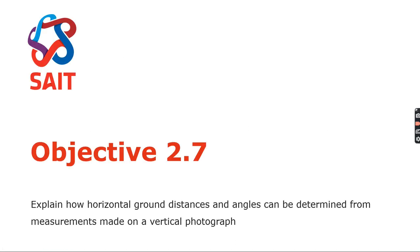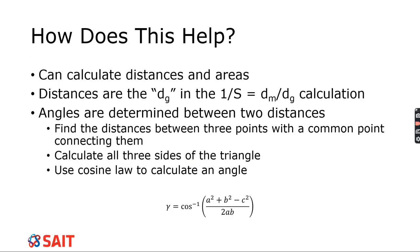Once we calculate scales on a map, we can move into looking at distances and angles at points we are unsure of. To find ground distances, we take the scale we just calculated, measure the distance on the aerial photo between two points, multiply by the scale, and divide by one. That gives us the ground distance.